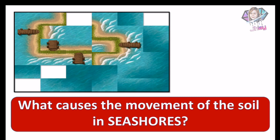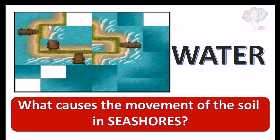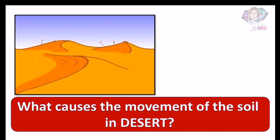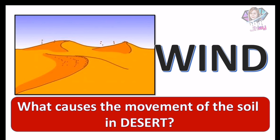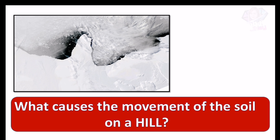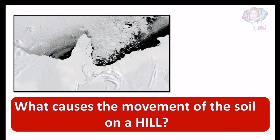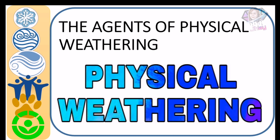What causes the movement of the soil in seashores? The answer is water. How about in this one — what caused the movement of the soil in desert areas? The answer is wind. What causes the movement of the soil on the hill? The answer is ice.